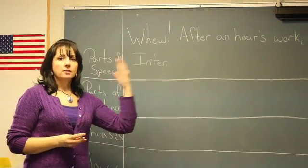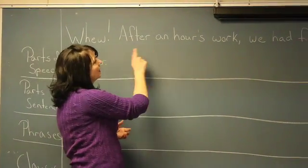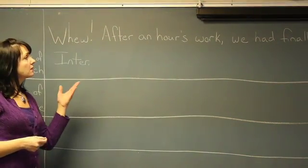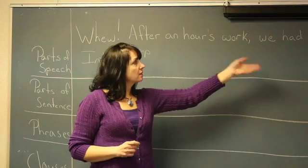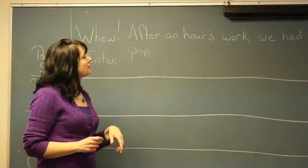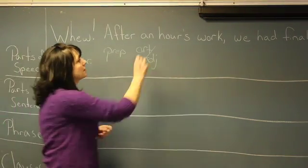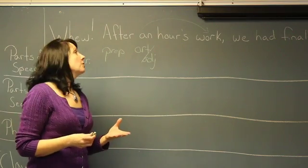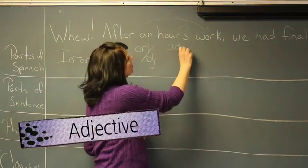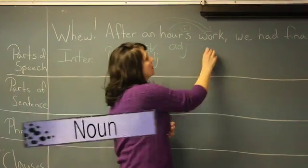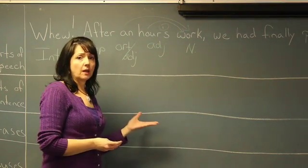The rest of the sentence is where the essence of thought really begins. First we look at 'after.' After can function as a couple different things, but in this sentence we look at what it is connecting — 'after an hour's work.' We don't have a subject or predicate in there, so the only thing it can be is a preposition, which connects a noun or pronoun to the rest of the sentence. 'An' is an article — a special kind of adjective, a little noun alert. 'Hour's' has an apostrophe showing possession, so instead of being a noun, it is actually an adjective modifying what kind of work. 'Work' is a noun here, though sometimes it can be a verb. You always have to see how a word is functioning in a sentence before you can identify the part of speech.